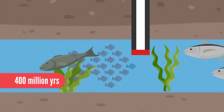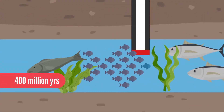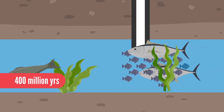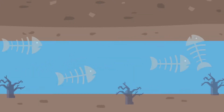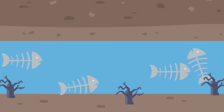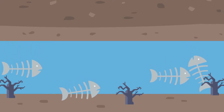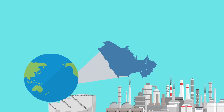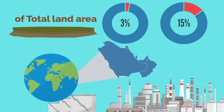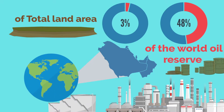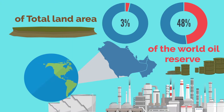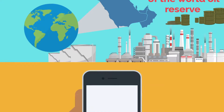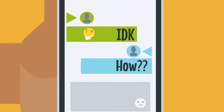Oil was formed over millions of years from the remains of marine organisms, plants, and algae that existed millions of years ago. The big question is: how do these Persian Gulf countries, covering only three percent of Earth's land, contain 48 percent of Earth's oil reserves?